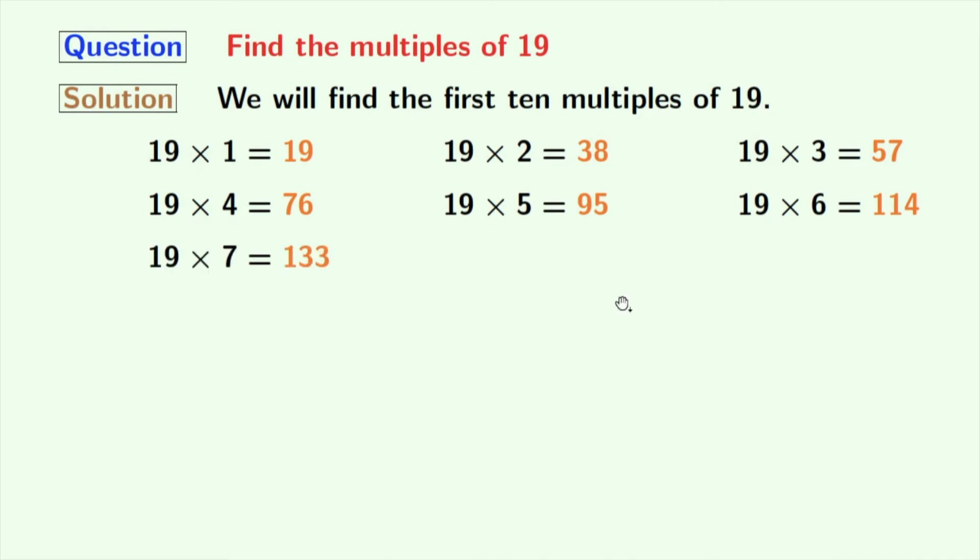Now, multiplying 19 with 7, we get 133. Multiplying 19 with 8, we get 152. Multiplying 19 with 9, we get 171.